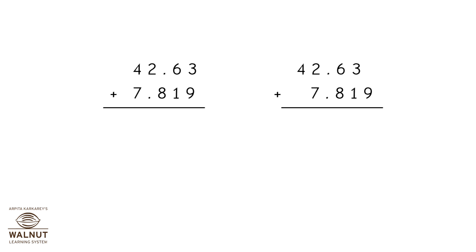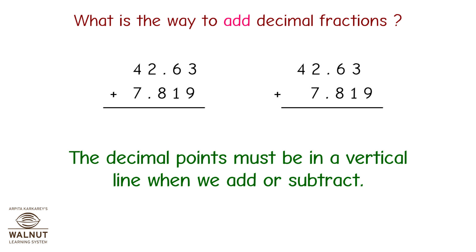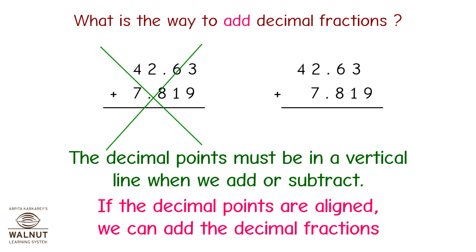Let's add these decimal fractions: 42.63 plus 7.819. The decimal points must be in a vertical line when we add or subtract. The first arrangement of numbers is wrong. If the decimal points are aligned, we can add the decimal fractions. In the second arrangement, the decimal points are exactly one below the other, so we can add them. The answer is 50.449.